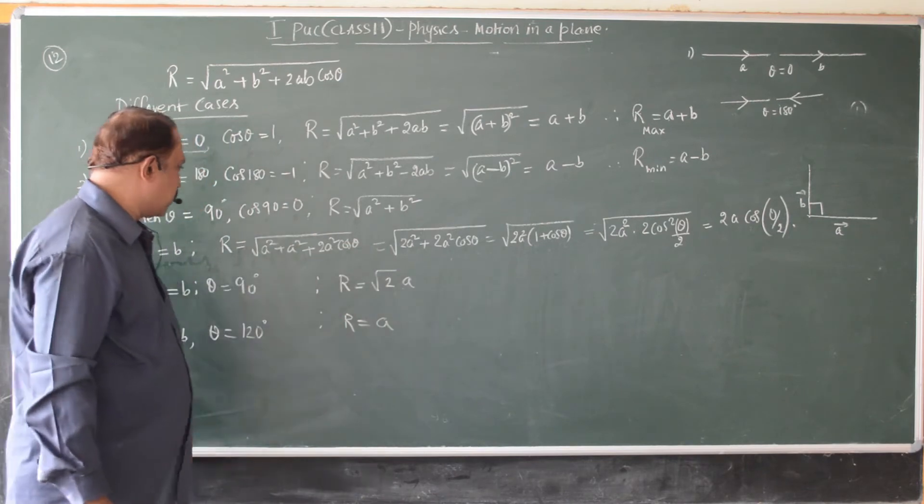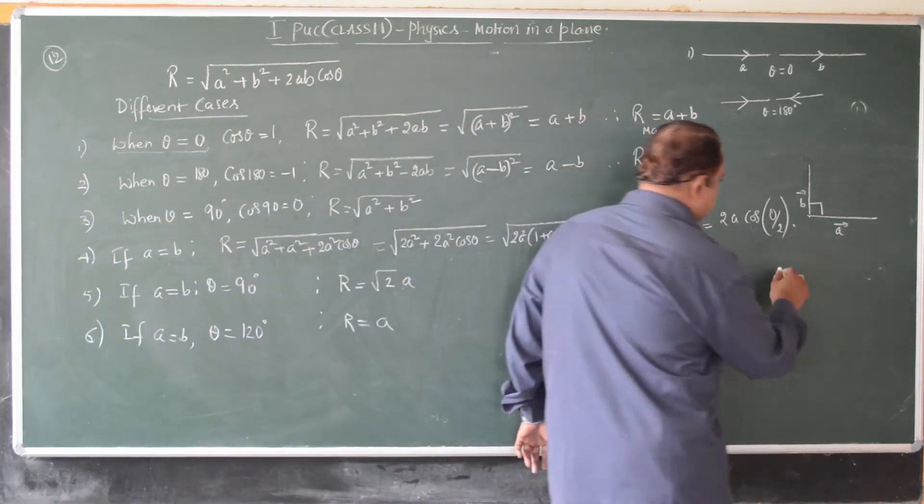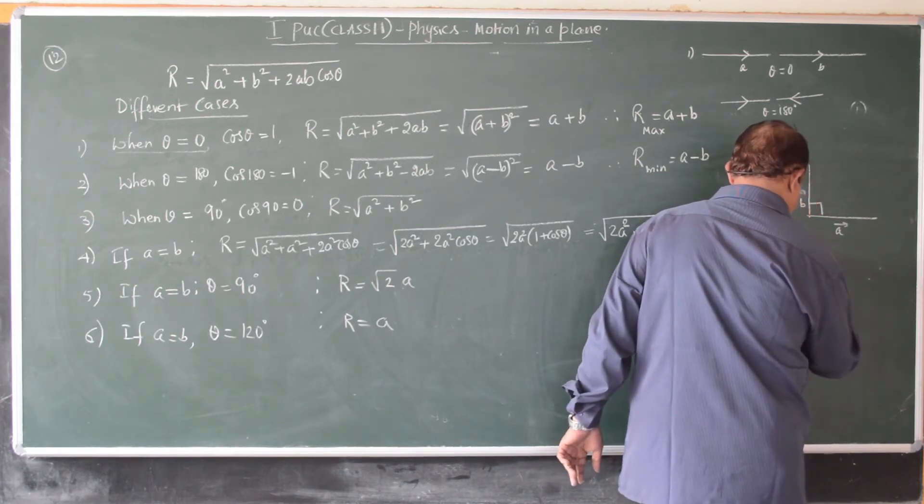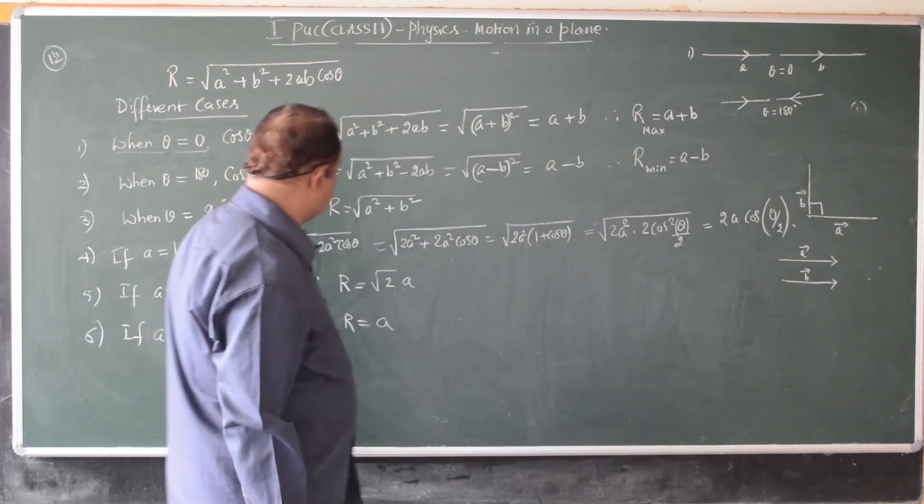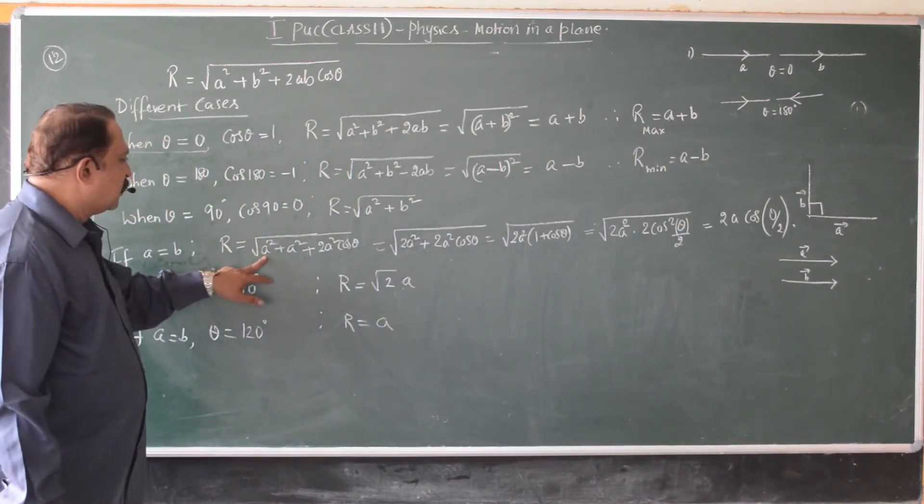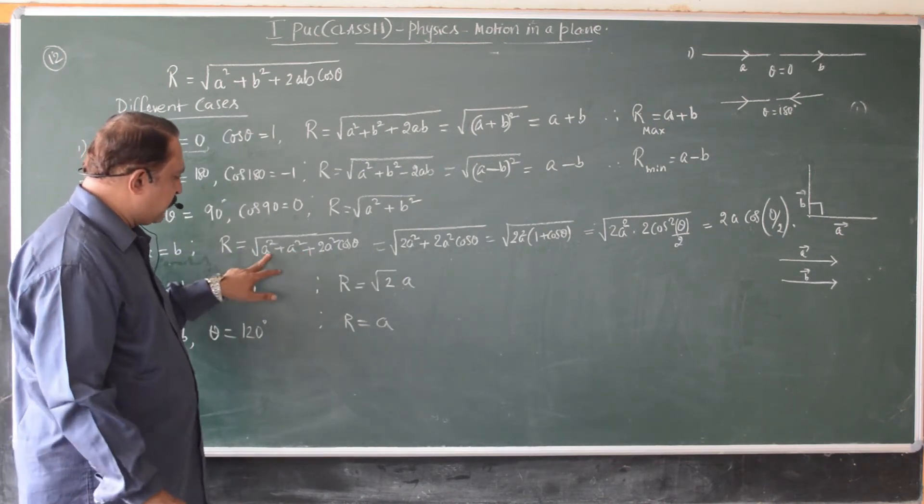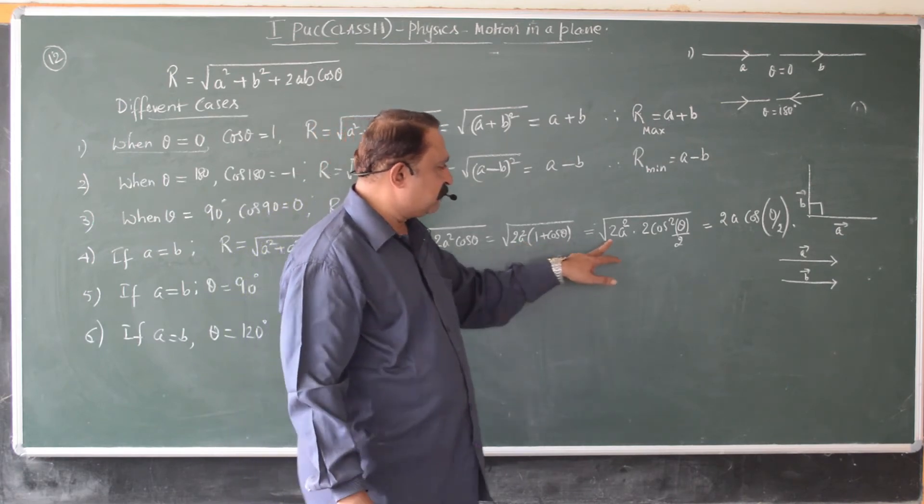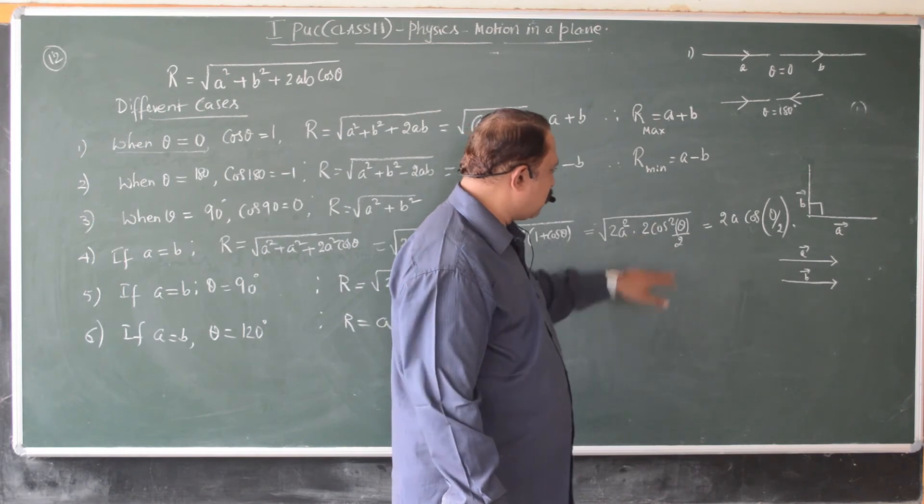If a is equal to b, if you have two equal vectors, then root of a squared plus a squared plus 2a squared cos theta, a squared plus a squared is 2a squared, taking 2a squared common in 2a squared into 1 plus cos theta, that is 2a squared into 2 cos squared theta by 2, because 1 plus cos theta is 2 cos squared theta by 2.